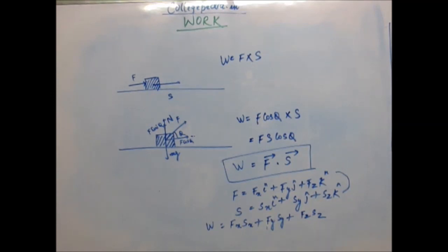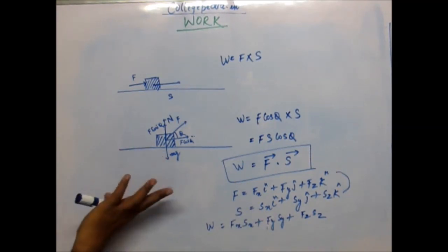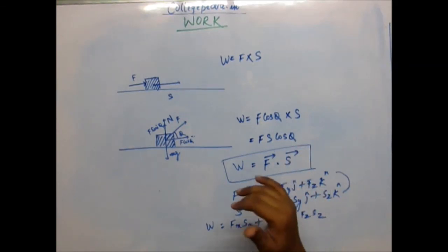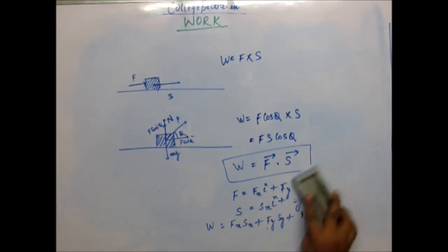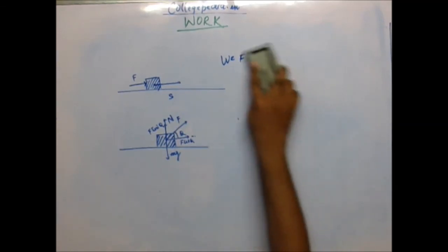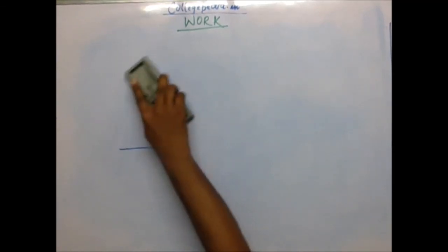So this is the complete definition of work. Now, depending upon the angle between the force and displacement, you would understand that the range of cos is between minus one and plus one. So for certain angles, this cos theta is going to be negative, so the value of work will turn out to be negative. We'll understand what that means, and first we'll see what will be those situations in which the value of work will turn out to be negative.